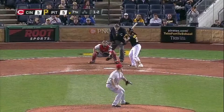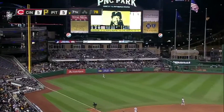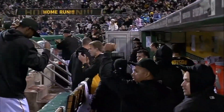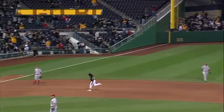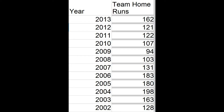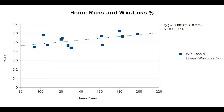The final hitting statistic we're going to look at is home runs, the most exhilarating part of a baseball game. Here are the Giants' home run values over the past 11 years, and comparing that with the win-loss percentages, we see that it has an even bigger r-squared correlation value than OPS. So of those three hitting statistics, home runs have actually best described the Giants' winning percentages over the past 11 years.